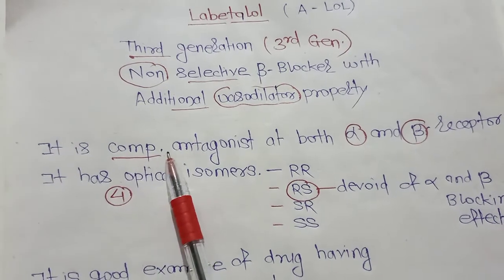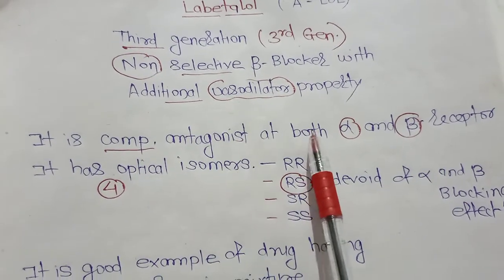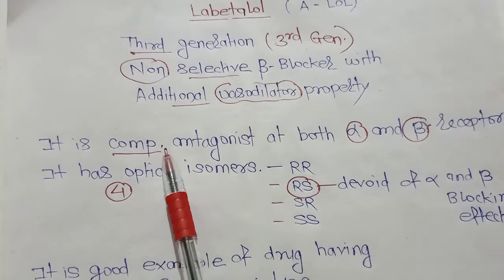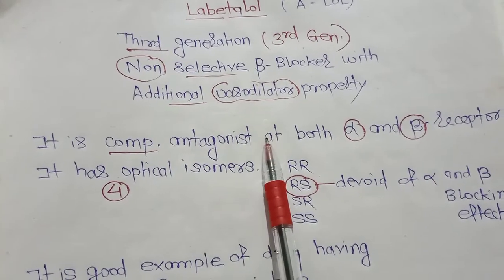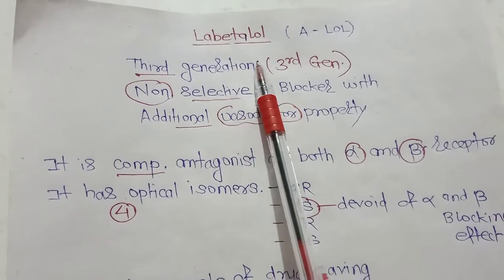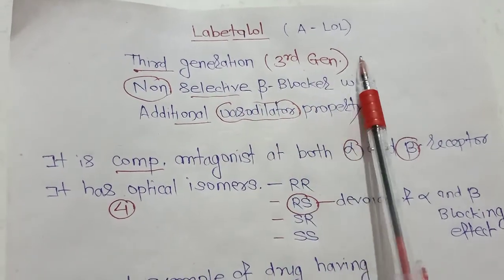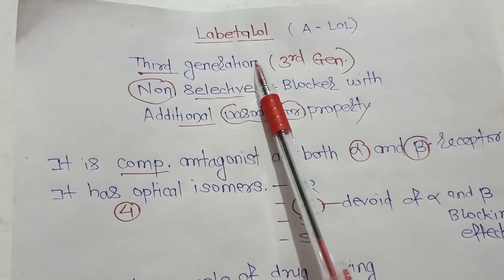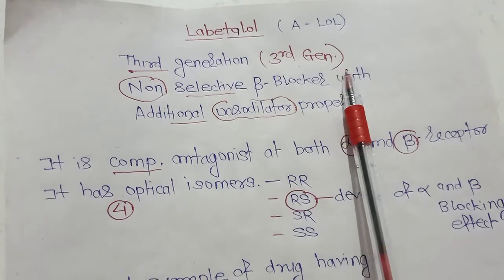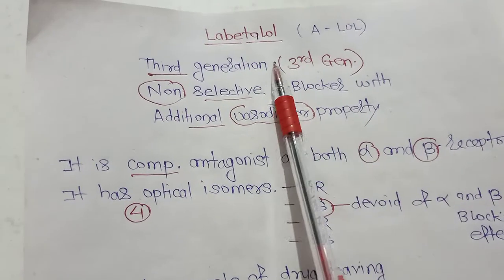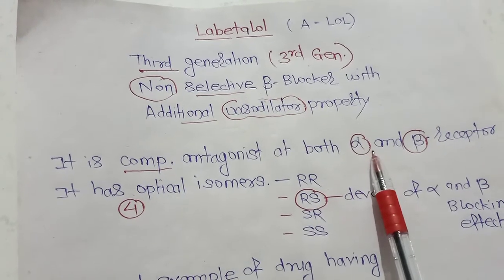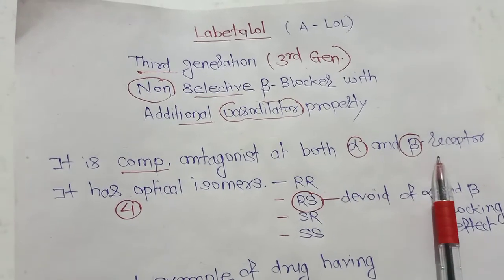Labetalol is a competitive antagonist at both alpha and beta receptors, and that's why it is called an alpha-beta antagonist or alpha-beta receptor blockade. It acts on alpha receptors as well as on beta receptors.